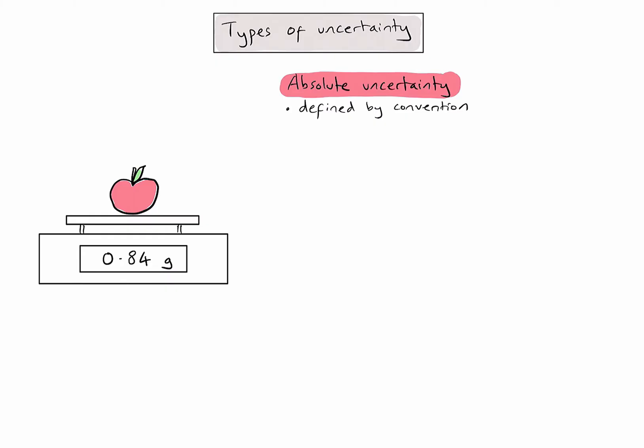Using this digital balance, it's going to be plus or minus 0.01, because that's the smallest reading that this piece of equipment can make. You can find more detail about these conventions in the video on uncertainty in measurement.